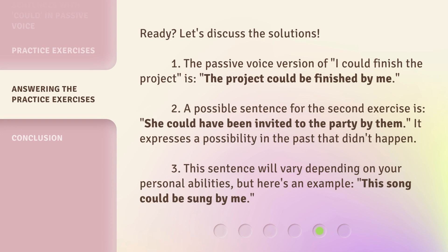Ready? Let's discuss the solutions. 1. The passive voice version of 'I could finish the project' is 'The project could be finished by me.' 2. A possible sentence for the second exercise is 'She could have been invited to the party by them.' It expresses a possibility in the past that didn't happen. 3. This sentence will vary depending on your personal abilities, but here's an example: 'This song could be sung by me.'